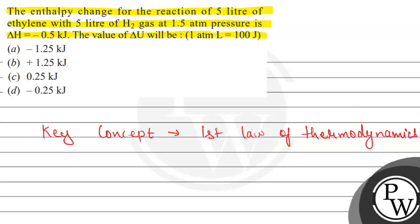According to the first law of thermodynamics, the energy remains conserved — it can neither be created nor be destroyed, but we can convert energy from one form to another form. For that, we have a mathematical equation: the change in internal energy is equal to the heat plus work done.